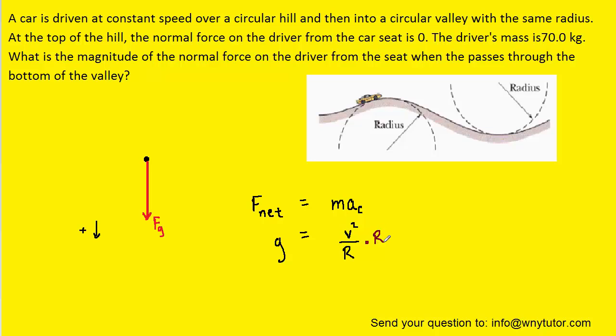Next, if we multiply both sides of this equation by R, which is the radius of the circular path, we see that v squared is equal to R times g. This is a result that we're going to hold on to and save for the next phase of the problem.